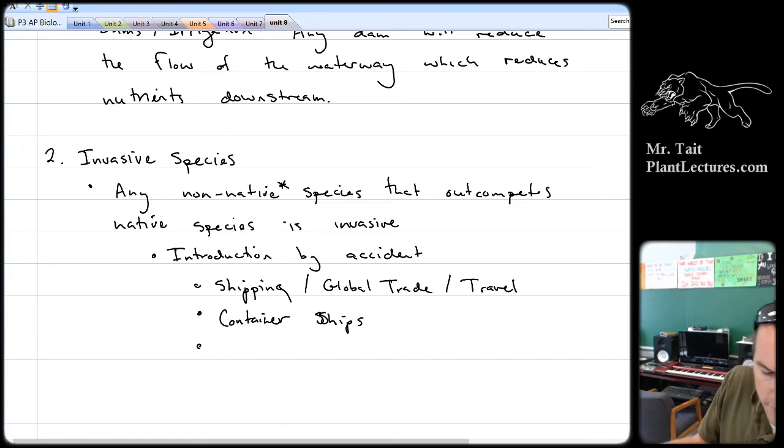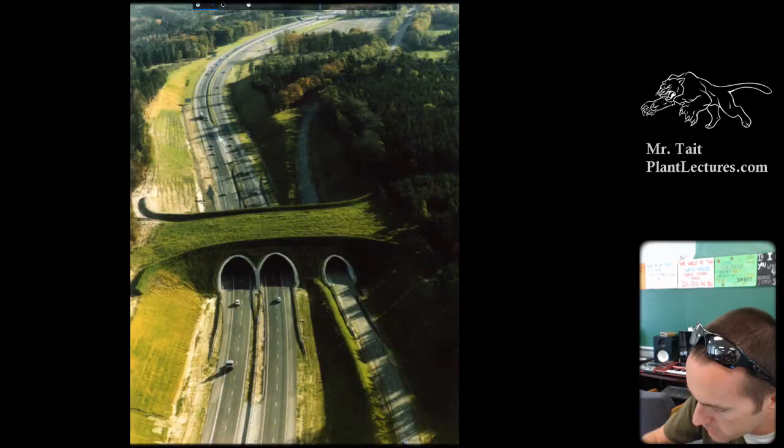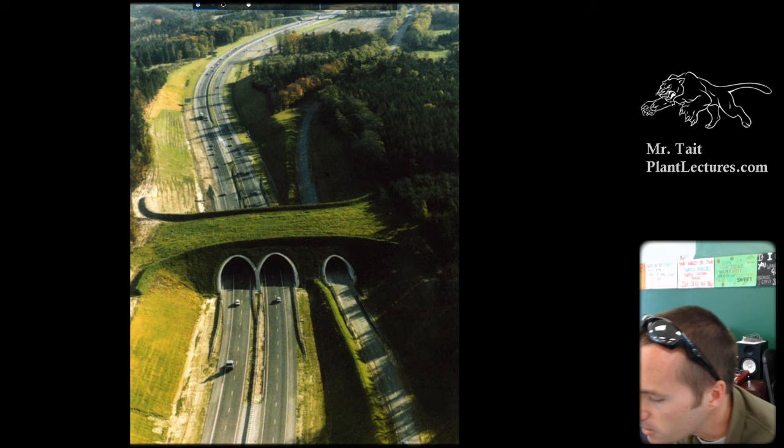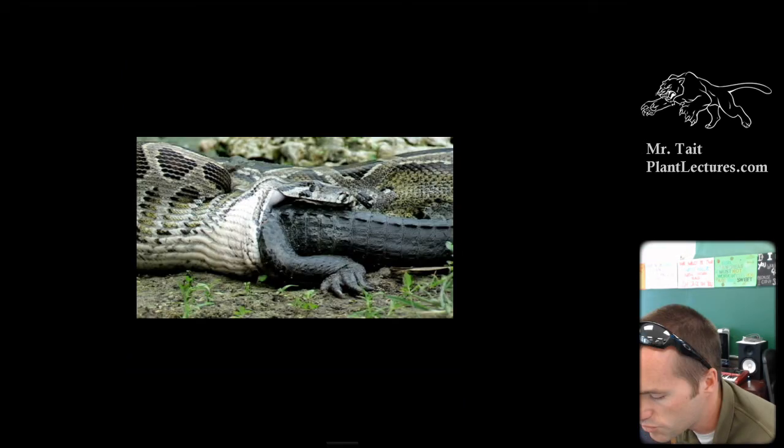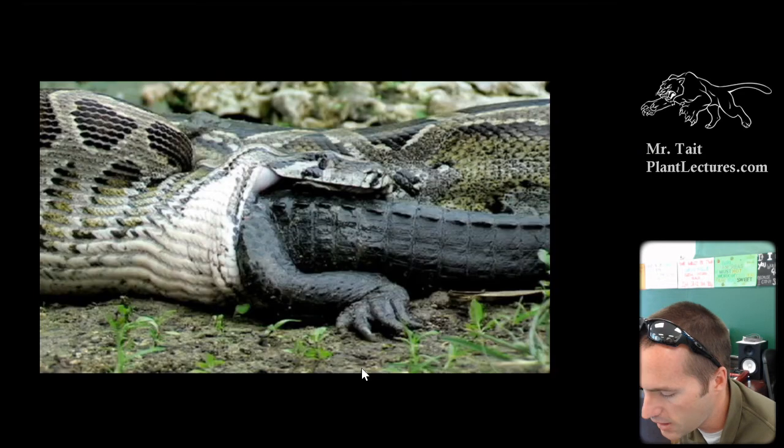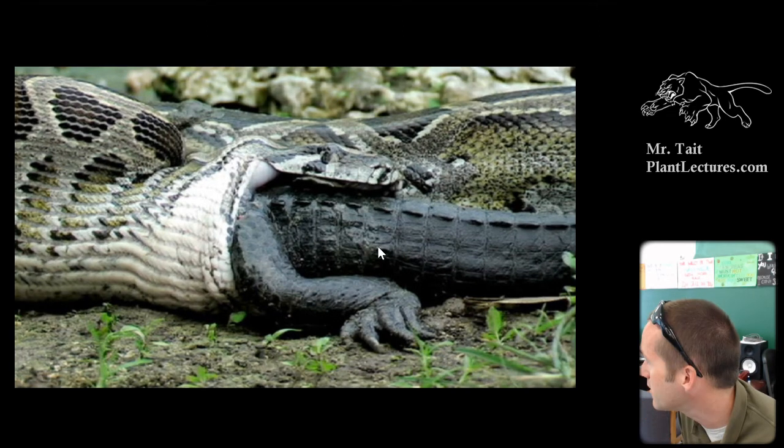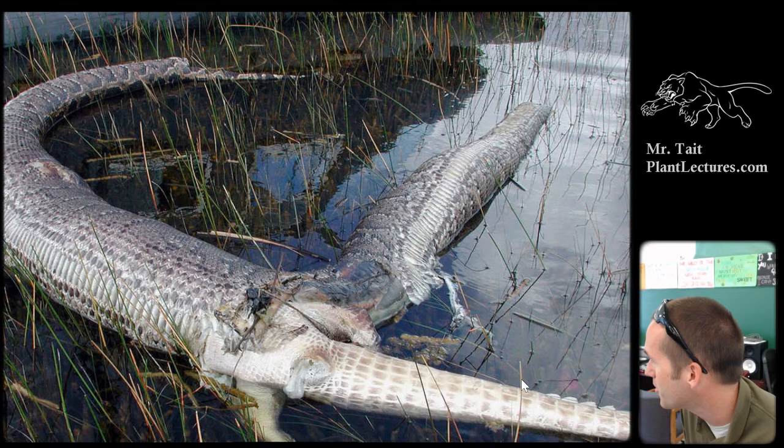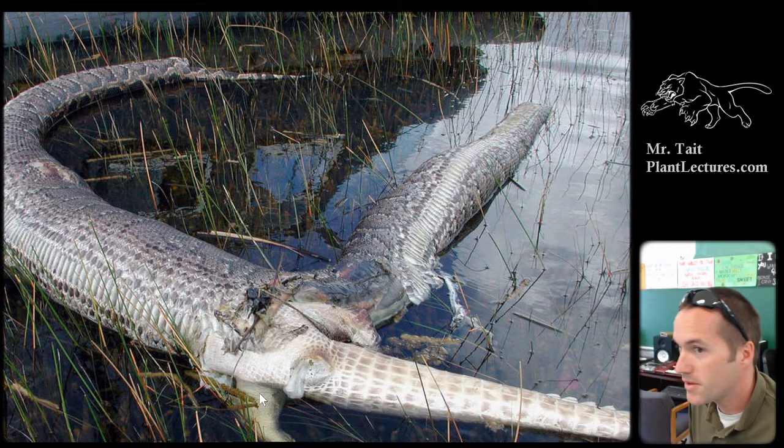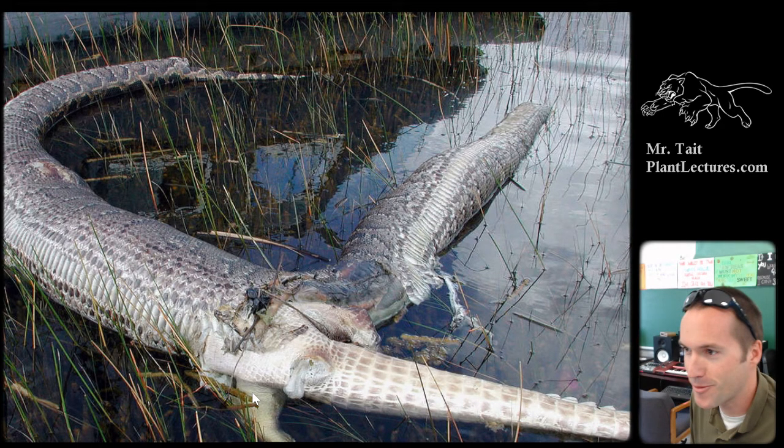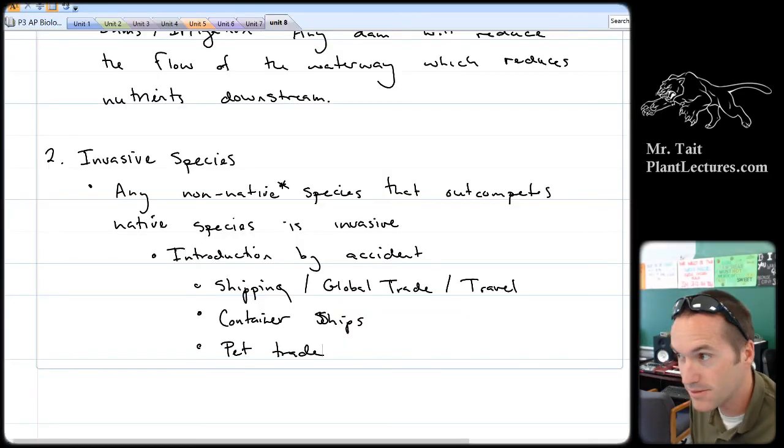Sometimes the pet trade causes introduction by accident. Here's a picture of a Burmese python eating an alligator in the Everglades. Here's a picture of a Burmese python who bit off more than he could chew and the alligator exploded out of him. The point is, Burmese pythons are from Burma, not from Tampa or the Everglades. These are invasive species. How did this invasive species get into the Everglades? People wanted them as pets, then they got too big and they let them out in the Everglades.